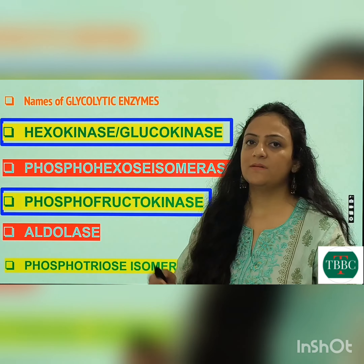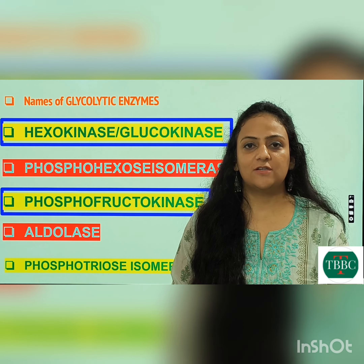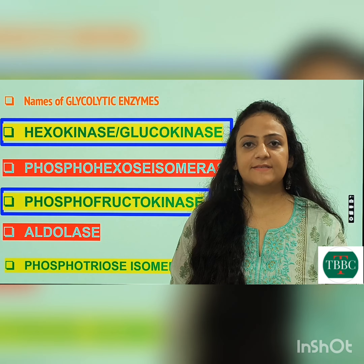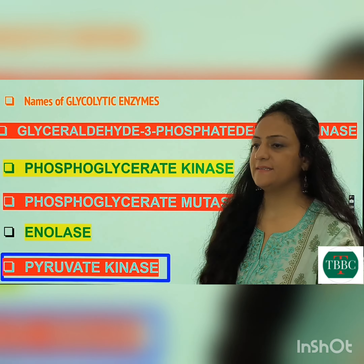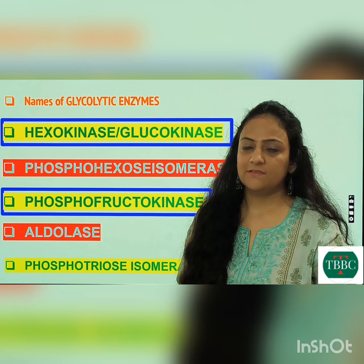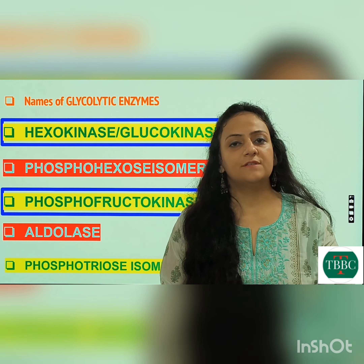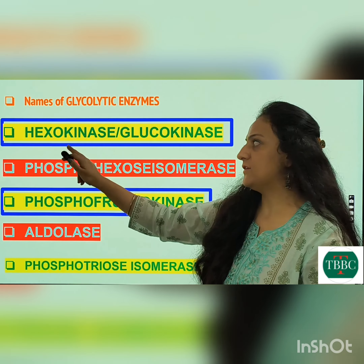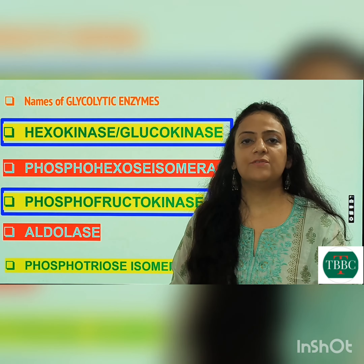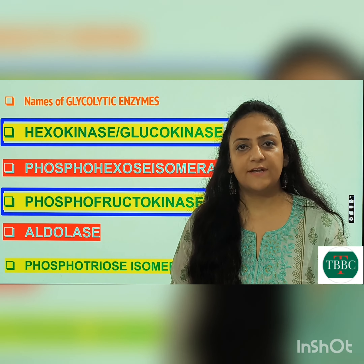Here are the names of all the glycolytic enzymes. There are 10 enzymes to remember in the process of glycolysis. The enzymes highlighted with the blue are involved in the irreversible steps of glycolysis: the first is hexokinase or glucokinase, the second is phosphofructokinase, and the third is pyruvate kinase. We will also discuss the function of the remaining enzymes.